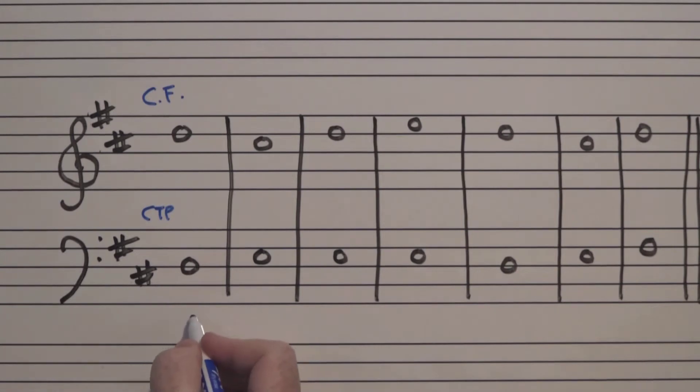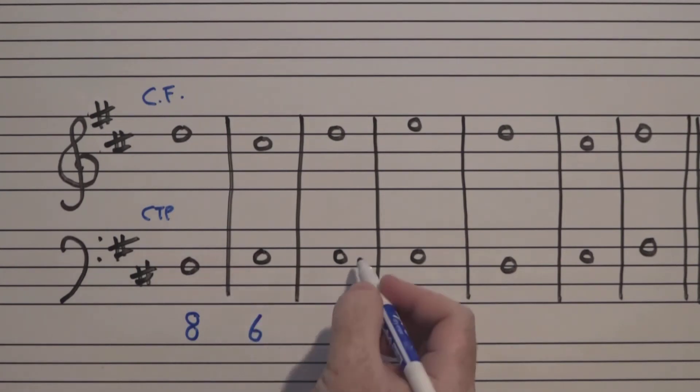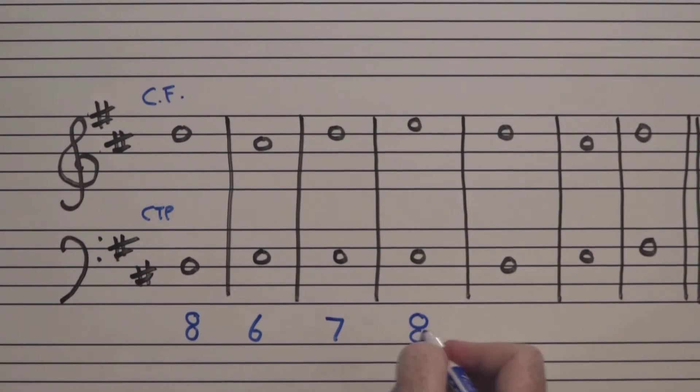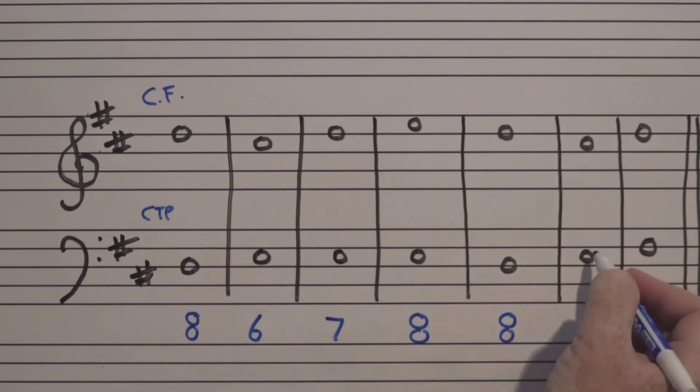You have to know that this is an octave, a D to a D, E to a C-sharp that's a sixth, E to a D that's a seventh, E to E that's an eight, D to D that's an eight, E to C-sharp that's a sixth, and F-sharp to D that's a sixth.